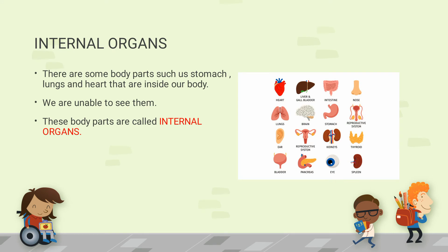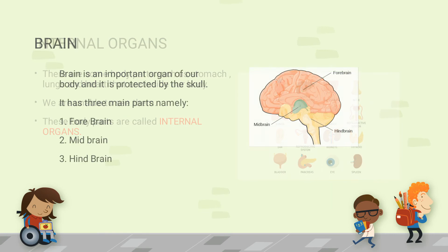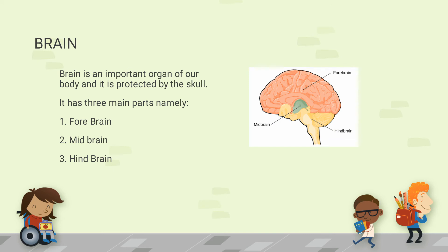So let's see this in detail. First: internal organs. The body parts which we cannot see, which are inside our body, are called internal organs. Some of them are shown in the image — like brain, heart, stomach, kidney, lungs, etc. As the first internal organ, we are going to see the brain. We all know the brain is an important organ of our body.